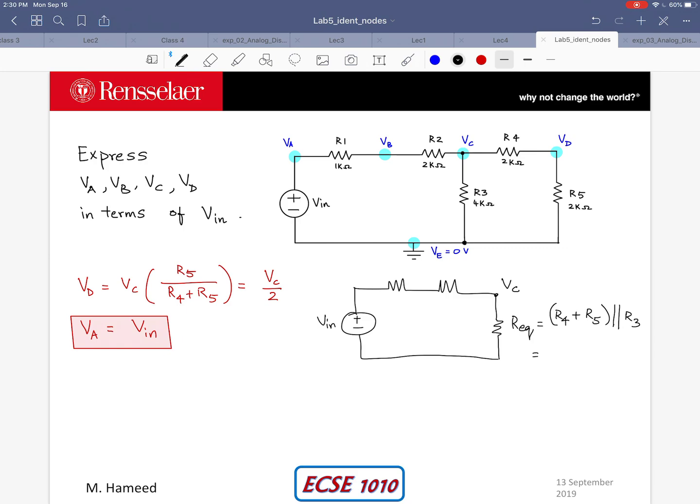So that is going to simplify to 4 kilo ohms in parallel with 4 kilo ohms which is going to be 2 kilo ohms. R1, R2, 1 kilo ohm and 2 kilo ohms remains as is from the previous circuit. I am also going to redraw my nodes here VB and VA and of course I have the ground over here.